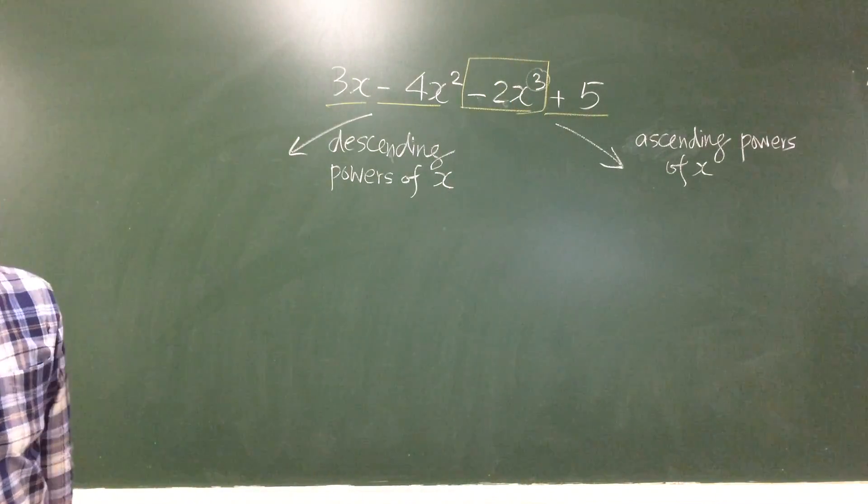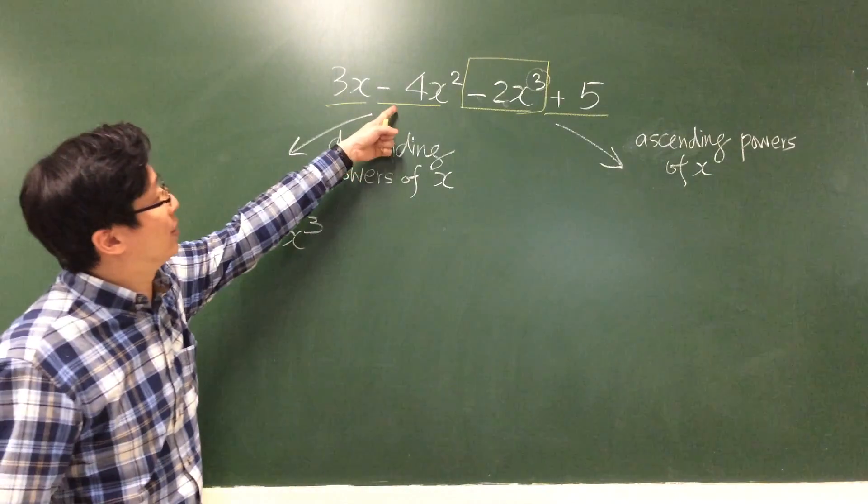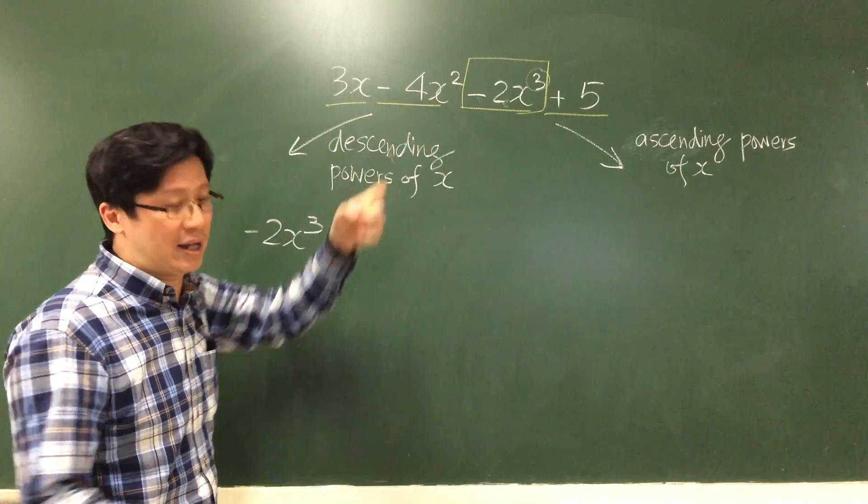The term with the biggest power of x is minus 2x cubed. Then the second term will be minus 4x squared.